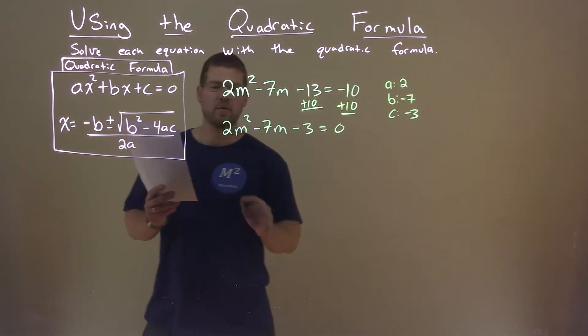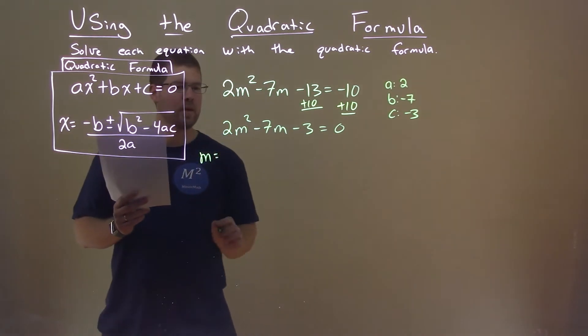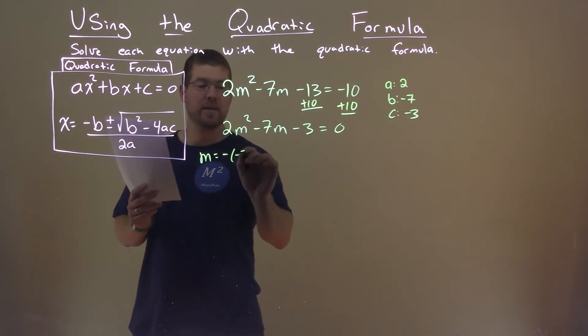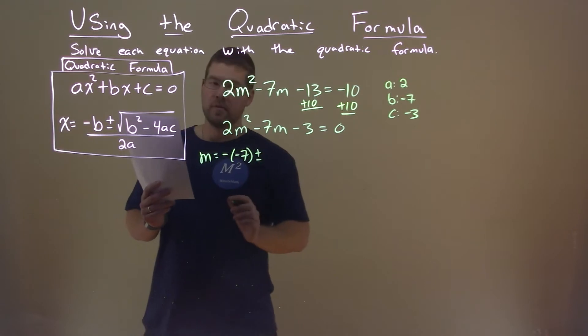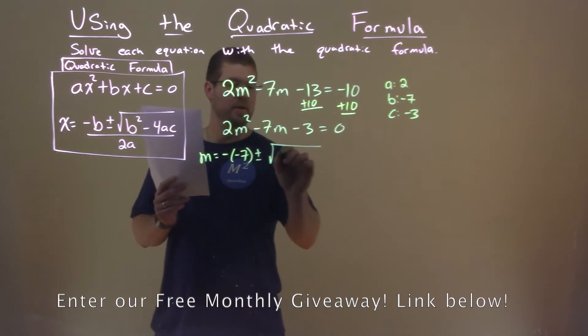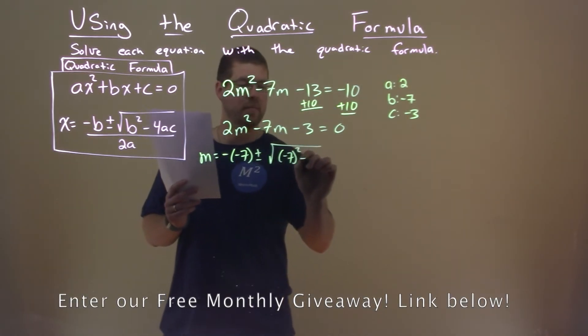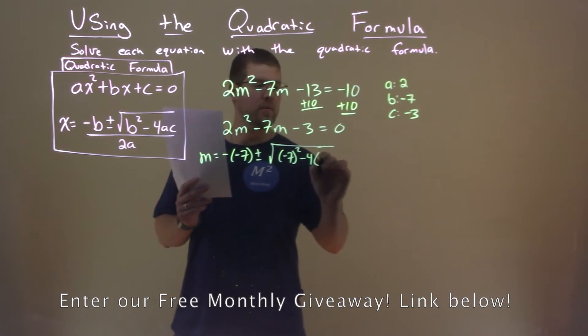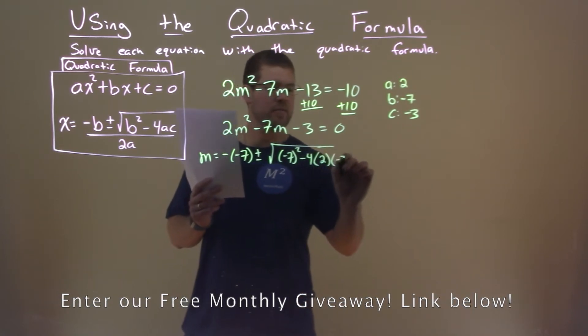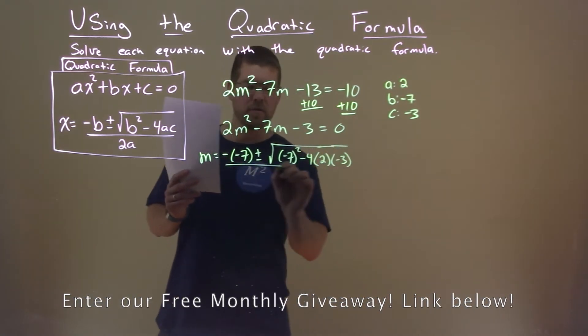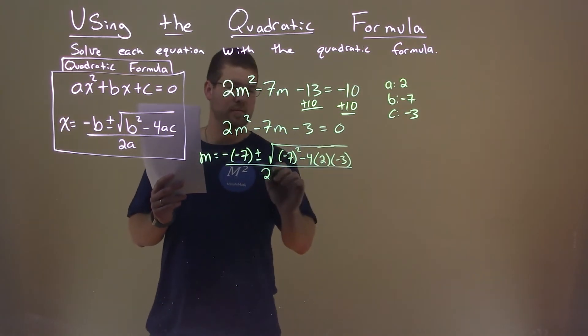So now let's use the quadratic formula here. m equals negative b, so negative 7, plus or minus the square root of (-7)² minus 4ac, which is 4(2)(-3), all over 2a, which is 2(2).